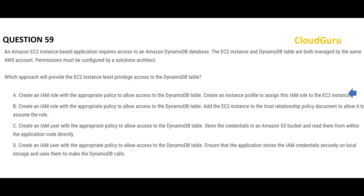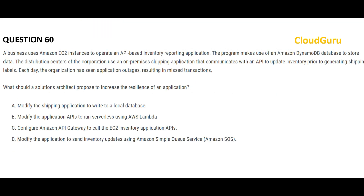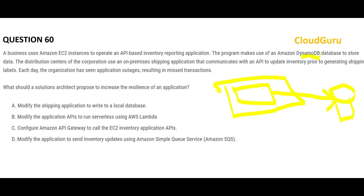Let's move to the next question. There is an application on an EC2 instance that stores its data in DynamoDB. There is another application that is on-premises, and this application communicates via an API to update inventory. The problem is that this on-premises application sees outages and goes down frequently, and these outages result in missed transactions — for example, if DynamoDB goes down, the update fails.